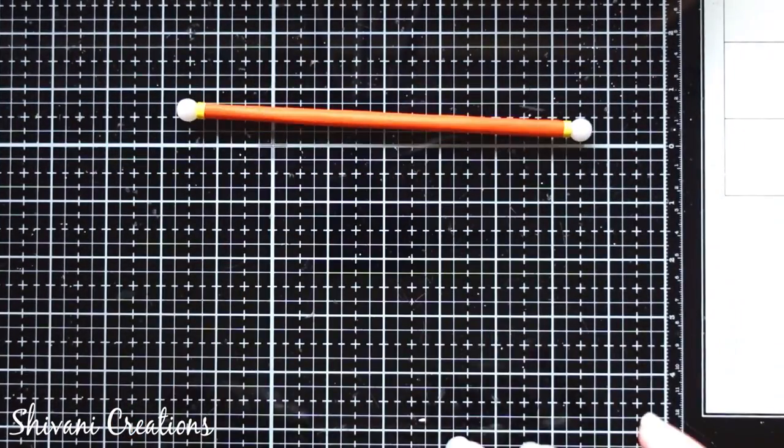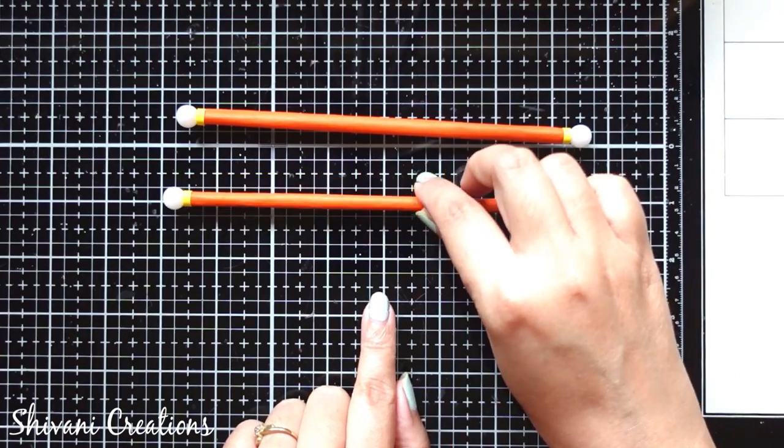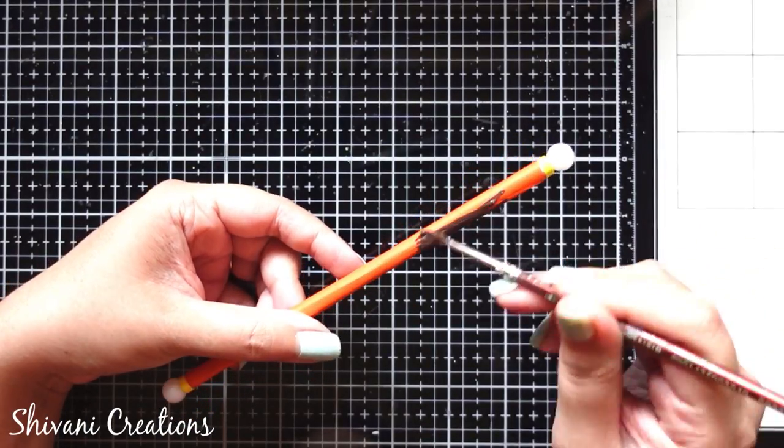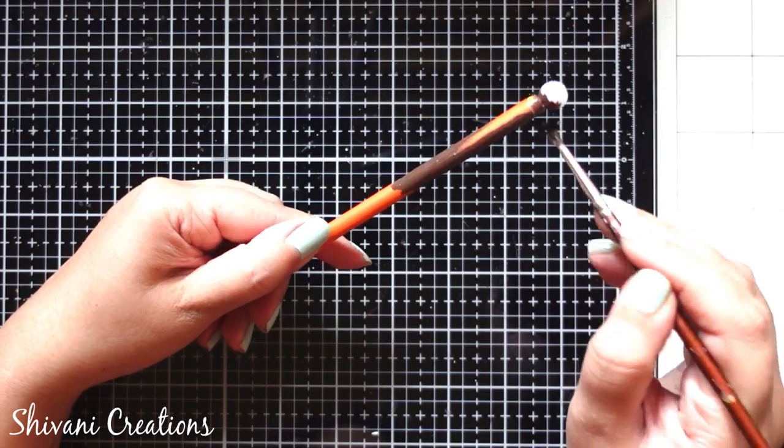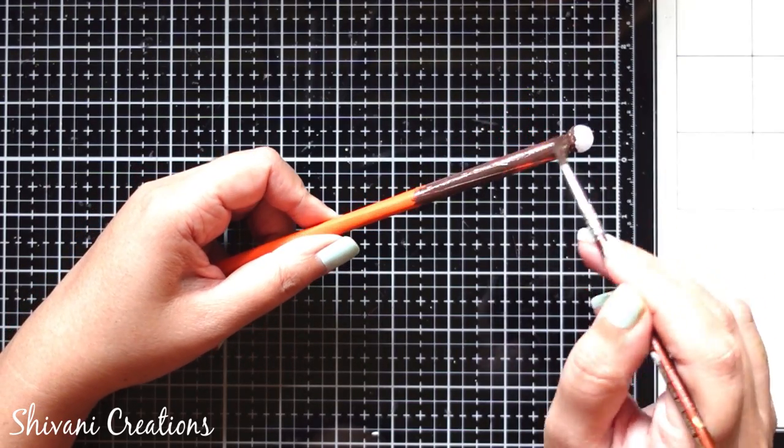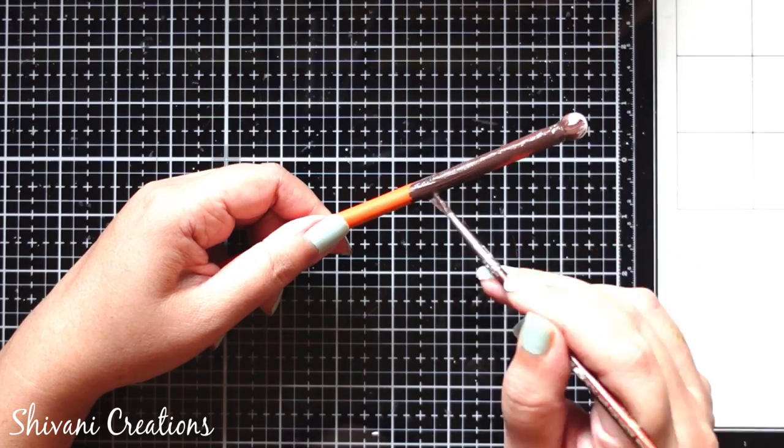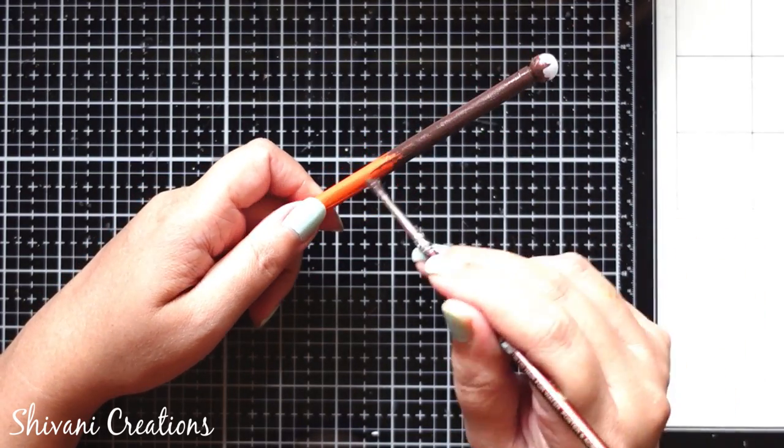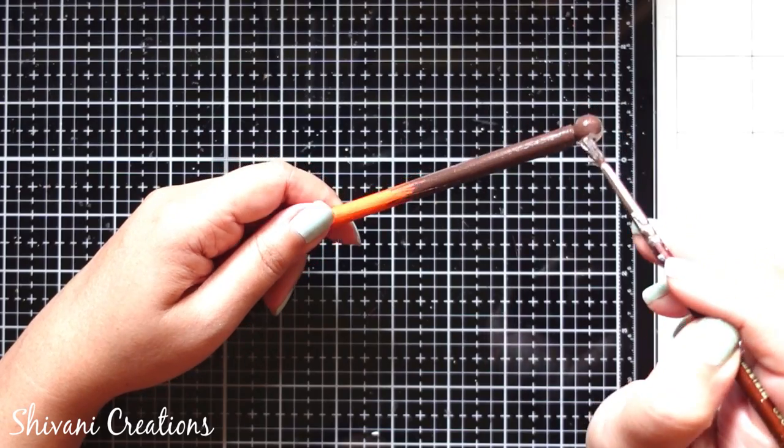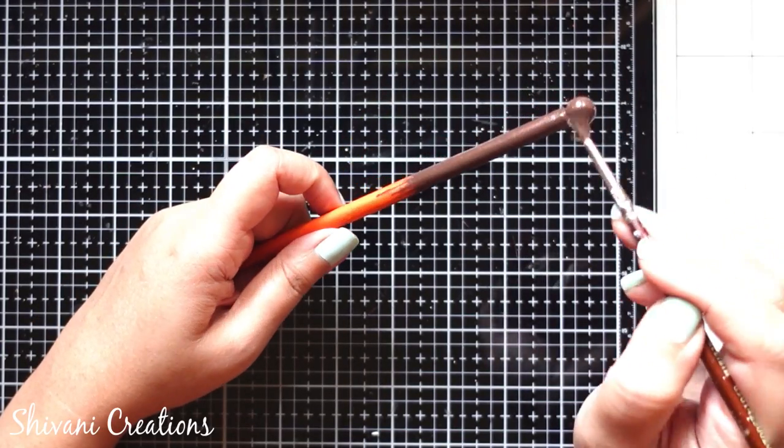Similarly, I have prepared one more pipe. Now it's time to color these pipes using some chalk paints. Here I am using brown color chalk paint and coloring it completely. You can also use acrylic colors if you don't have chalk paint. Just wanted to give little vintage look to my scroll.